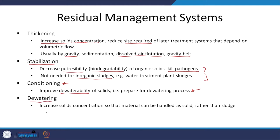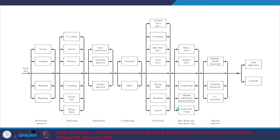The final step is dewatering: increase solids concentration so that we handle it as a solid rather than as a sludge, and then disposal to landfill or apply it to soil. Looking at the bigger picture, depending upon the kind of solids coming in, some preliminary options include blending or grinding. For thickening, we have gravity, flotation, and gravity belt. These days people are also looking at rotary drum or belt press.